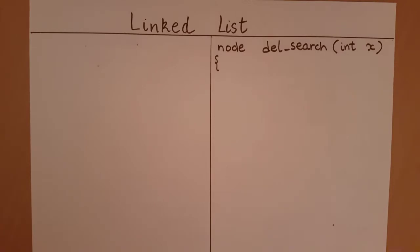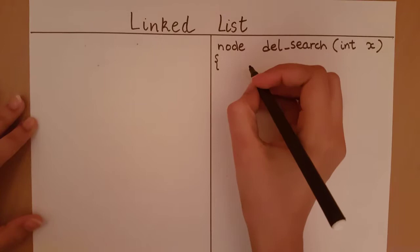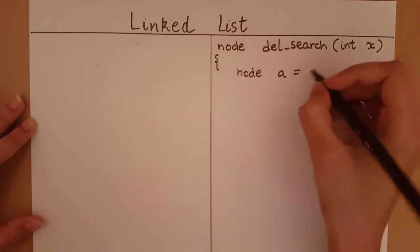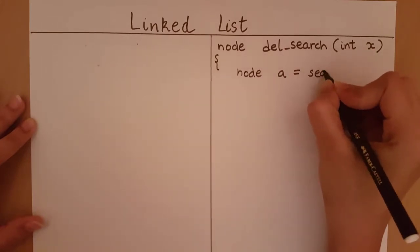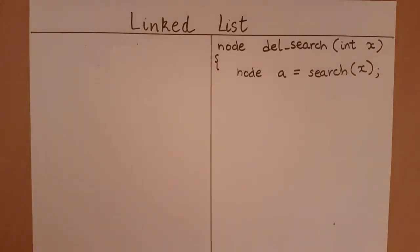Let's look at the different cases we can encounter. The first thing we need to do is search for the element x. As we have written in our search function, I'm going to set node a equal to search(x). This function will take in the input x, check if it is present in our list, return the node at which it is present if found, or return null if not found.